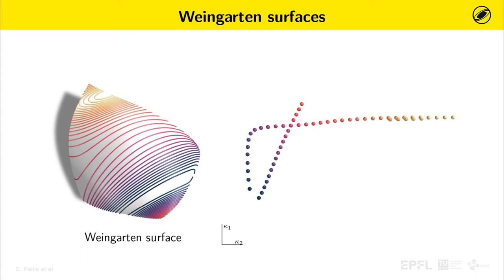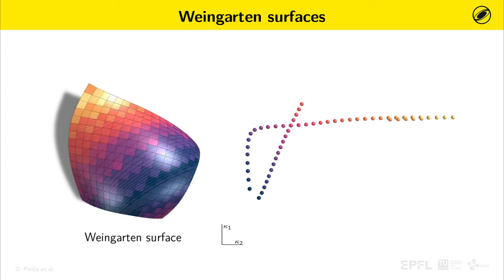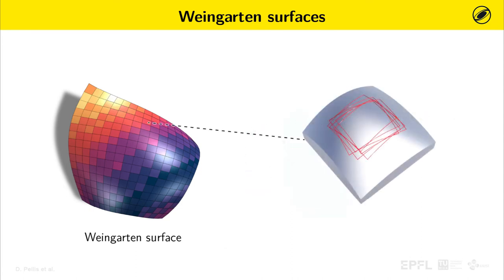To the curved points in the principal curvature plane, there corresponds a family of lines on the surface along which the principal curvatures K1 and K2 are constant. This means that along these isolines, the osculating paraboloid of the surface is the same. Due to this property, Weingarten surfaces are particularly interesting for architectural paneling. Indeed, panels disposed along curvature isolines have a similar shape and therefore can be formed on the same mould.